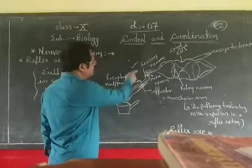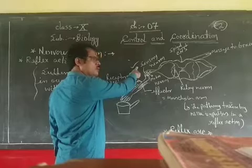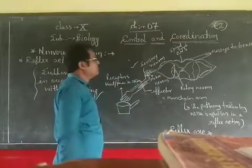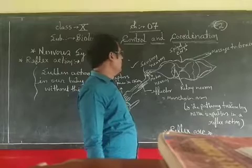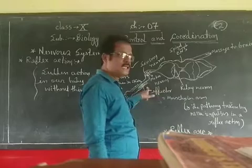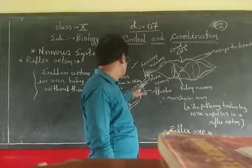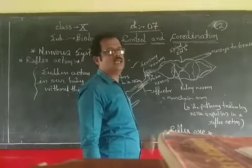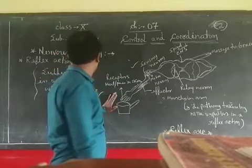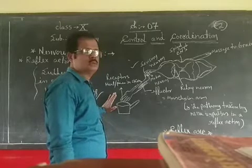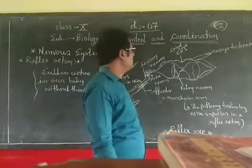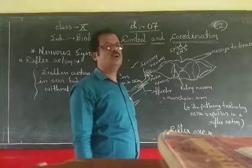In this way, sensory neurons and motor neurons work together. Sensory neurons receive the message from the outer environment through the receptor and take it to the spinal cord. From there, the action is taken — the result or output is carried out by the motor neurons, which signal the muscle cells. The muscle cells then order our hand muscles to move suddenly. This is how reflex action works. The final decision is made by the spinal cord.